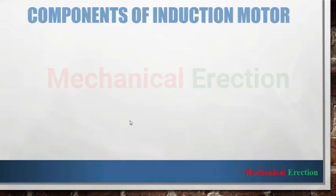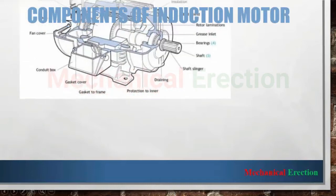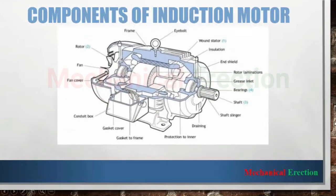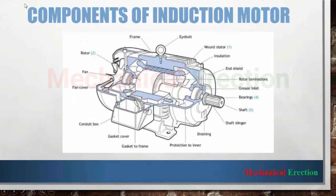Let's see the different components of an induction motor. First is the stator. It contains the main windings of the motor which are connected to the supply — that means the part where we give the electrical connection to a motor. It is simply the stator.